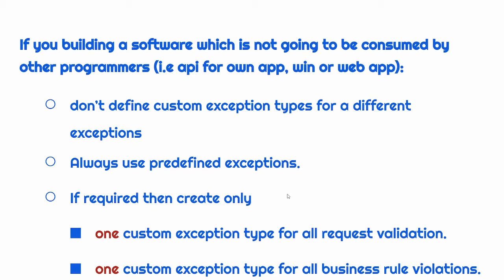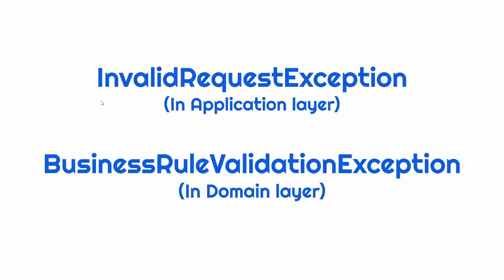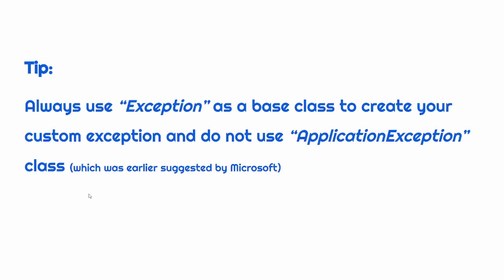However, in our project, we will be creating two exception classes: one to handle all request violations and another to handle all business rule violations. We will name these two exception classes: invalid request exception class, which will reside in the application layer as it will deal with request or command object validations. And in the future, we will also be adding a business rule validation exception class which will reside in the domain layer, and we will use this class to throw all business rule violations. While writing this custom exception class, we will not derive it from the application exception class, but we will always derive it from the exception class.